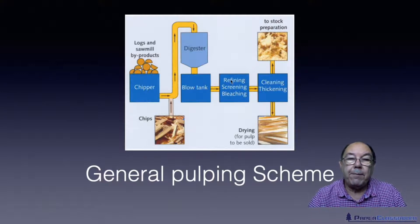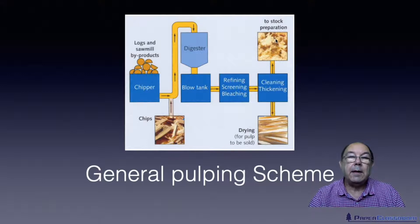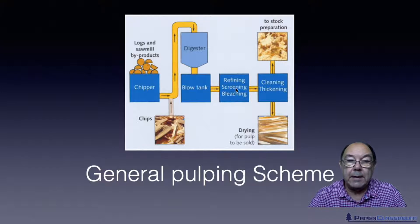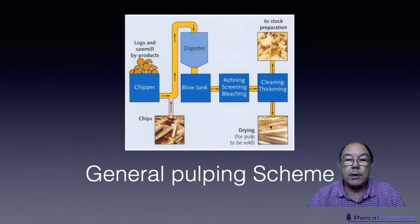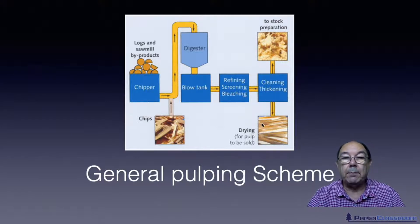You may or may not wish to refine the pulp depending on what you're going to do with it. If you refine it you might put it through a cleaning stage and then to stock preparation — in that case you are an integrated mill. Or you may not refine it; you may just thicken it, turn it into sheets of unrefined pulp, dry it and sell it — in which case you are a pulp mill.